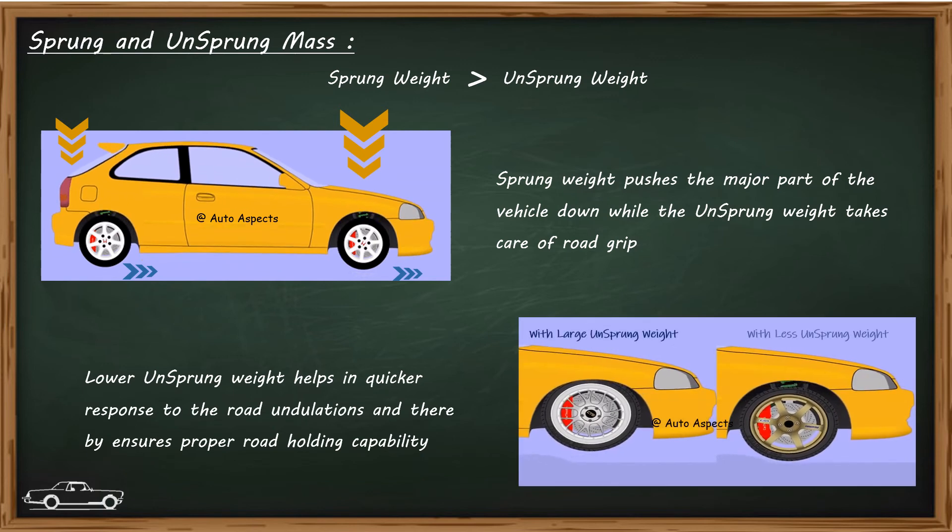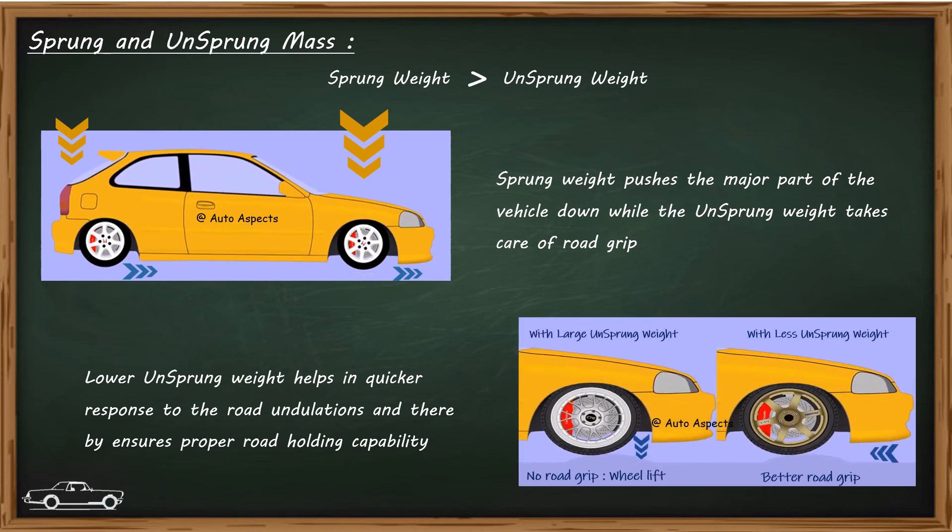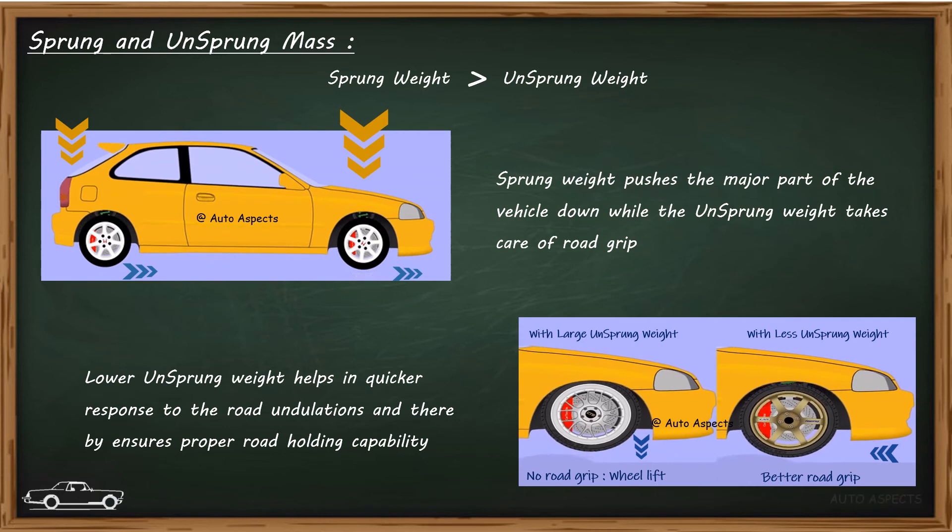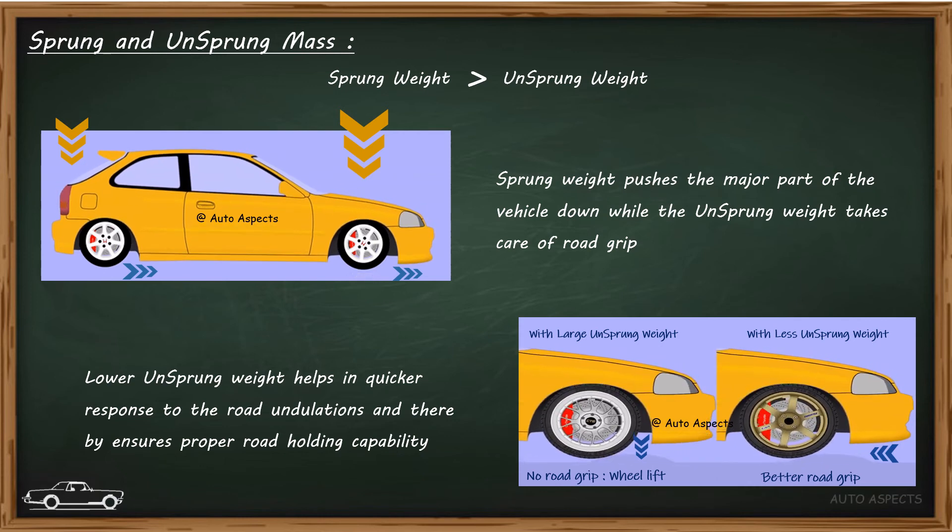In general the unsprung weight is minimized, as this helps the system to react to small bumps or undulations on the road profile more quickly, and thereby ensuring better road holding capability.